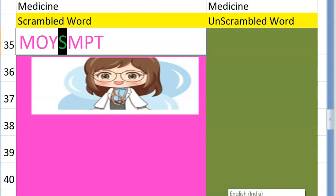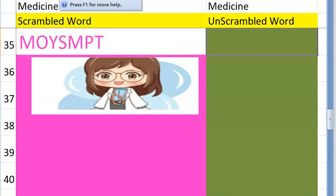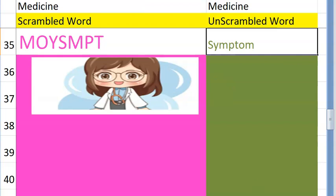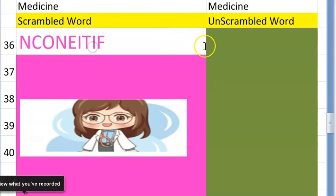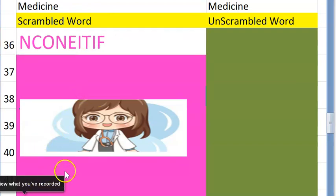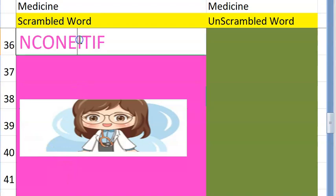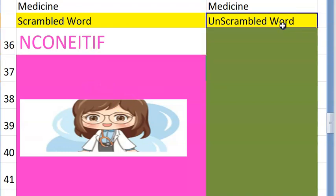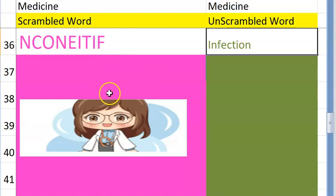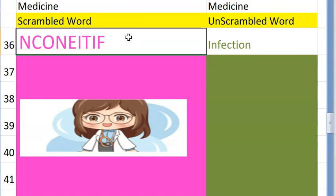The thirty-fifth one starts with an S — the patient is telling you these things are happening to him — what you call what the patient presents with — a symptom. Very good! The thirty-sixth one starts with I — something caused by bacteria, virus, or fungus — infection. Very good!